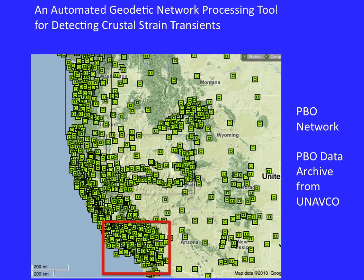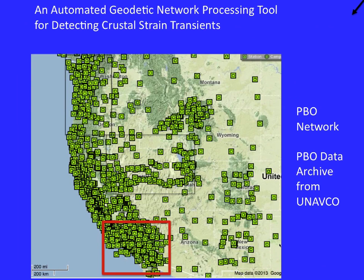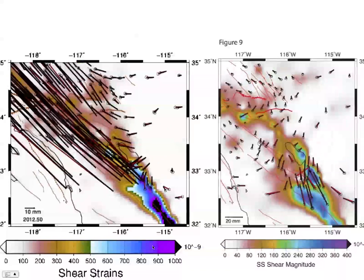Now let's get back to the time-dependent behavior of the plate boundary zone. Our goal is to really monitor the whole plate boundary zone over time—on timescales of days to weeks to months and over years. Here are some time series down in the south. One thing I'm going to talk about today is the post-seismic feature, the anomalous strain associated with El Mayor. We're north of that rupture, and the GPS stations are situated to the north of it.